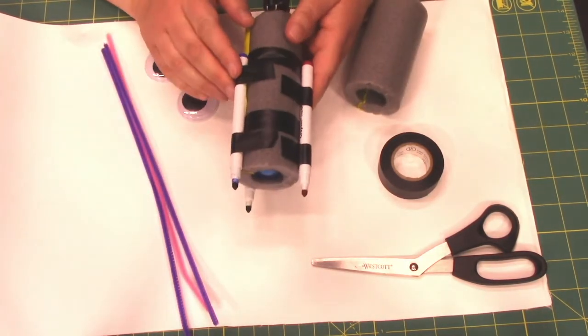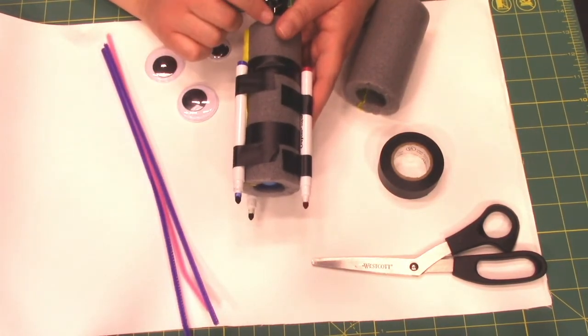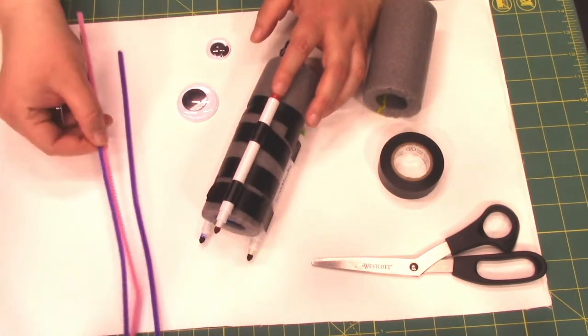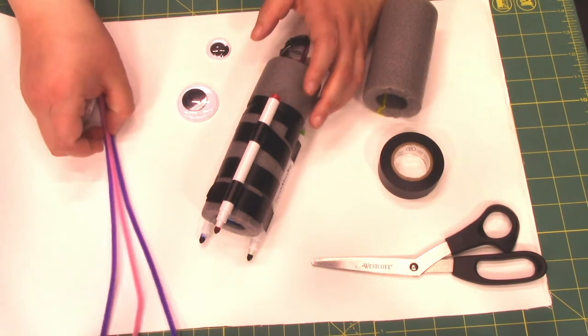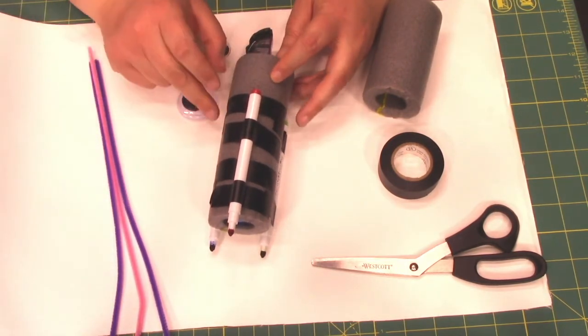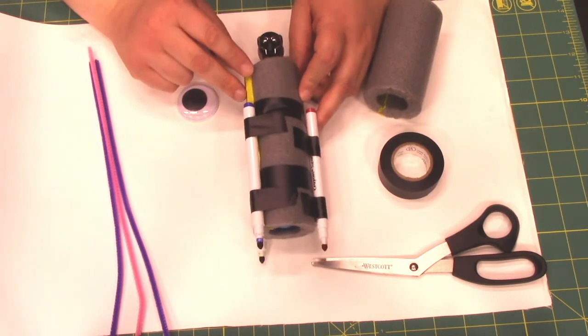Now if you would like, you can also decorate something like this. You can use googly eyes, you can use pipe cleaners, feathers, whatever you have. It's nice because with the foam, you can stick stuff into that so you can decorate it and make it a fun little project.